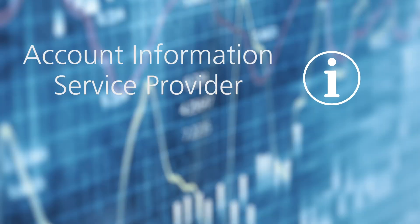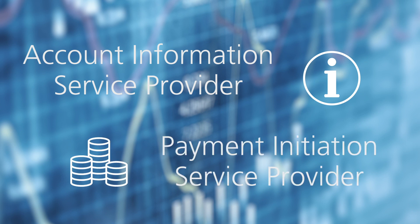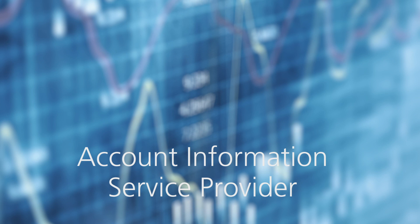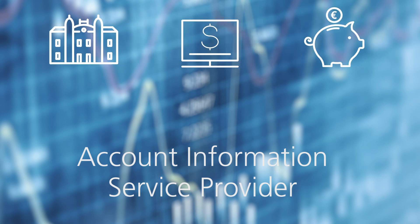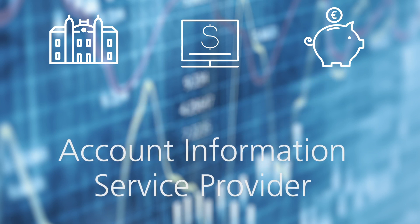With open banking in the UK, we've seen the introduction through regulation of two new types of entities that are themselves the subject of regulation. They are an account information service provider and a payment initiation service provider. The account information service provider is designed to perform a role consolidating customers' financial information between different banking providers. Customers are now able to give consent to their data being shared between all of their banking relationships, and the account information service provider performs that function subject to regulations in the UK.